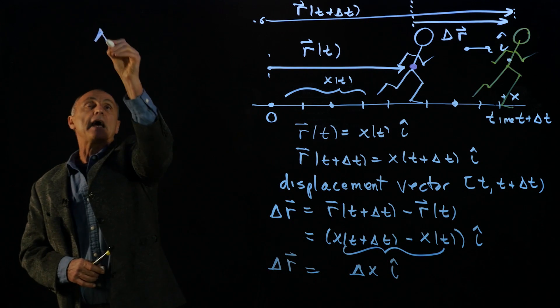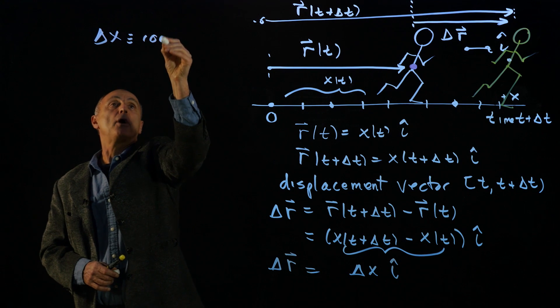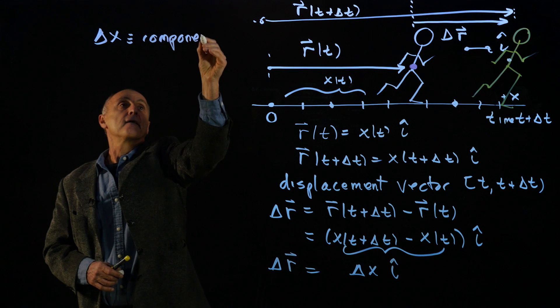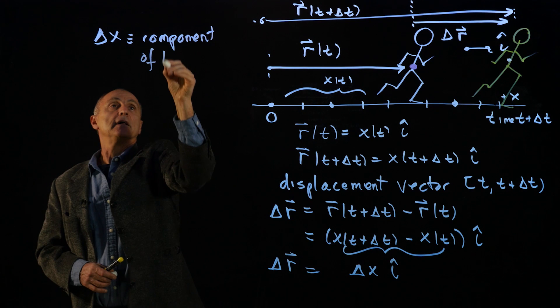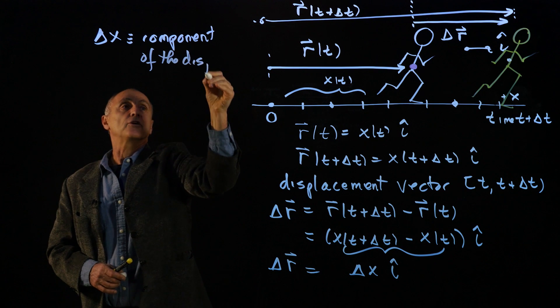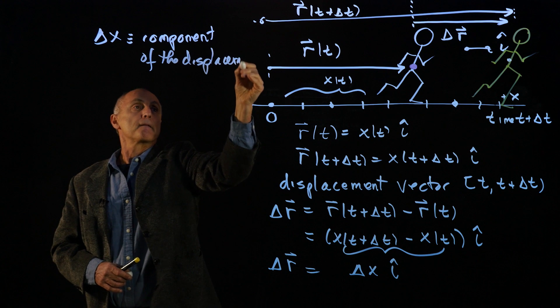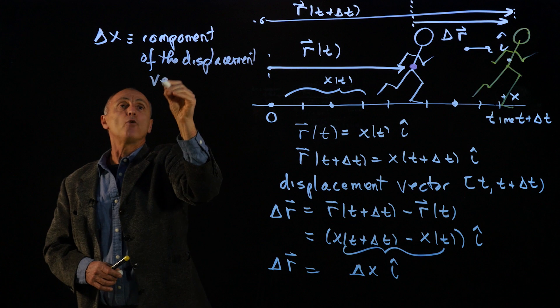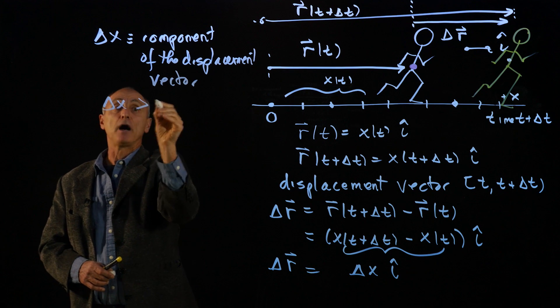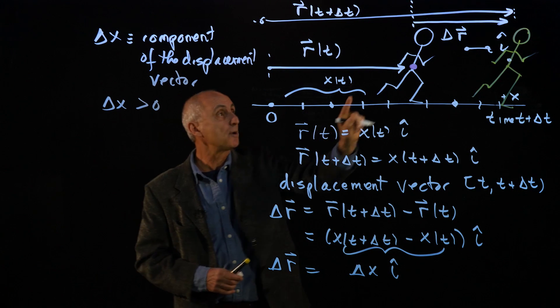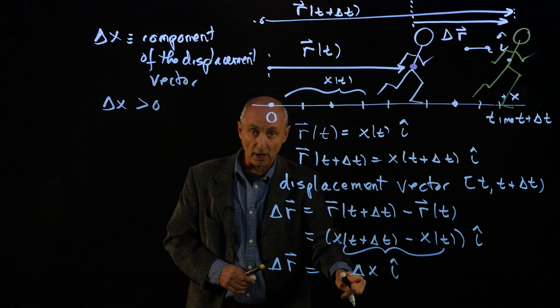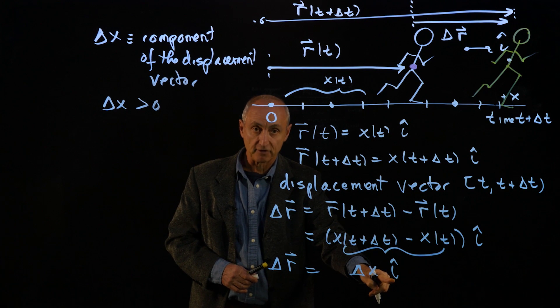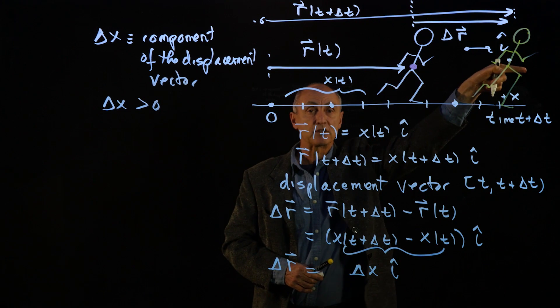So delta x is the component of the displacement vector. And as before, the component can be positive, which would correspond to the person moving a positive component in the positive î direction, in the positive x direction, as shown in this figure.